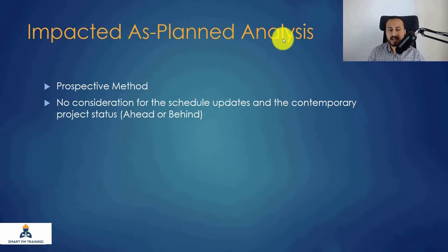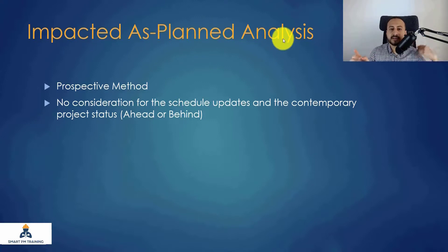For example, I have one schedule update — I am the contractor and I did really good progress. It is showing me that the forecasted completion date is one month earlier than the project completion date.